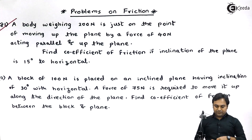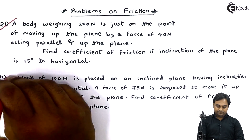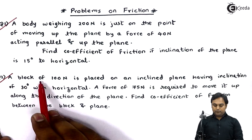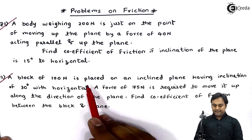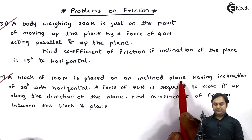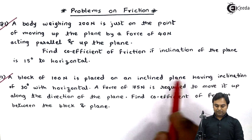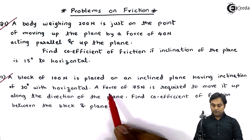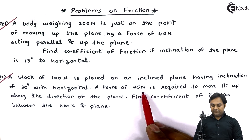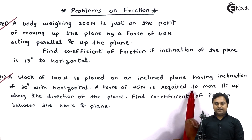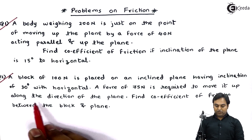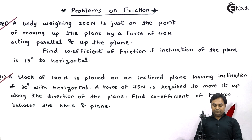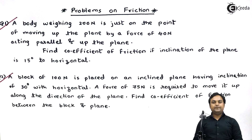Let us take the next question — question number two. Let us read what is given here. A block of 100 Newton is placed on an inclined plane having inclination of 30 degrees with horizontal. A force of 75 Newton is required to move it up along the direction of the plane. Find the coefficient of friction between the block and the plane.